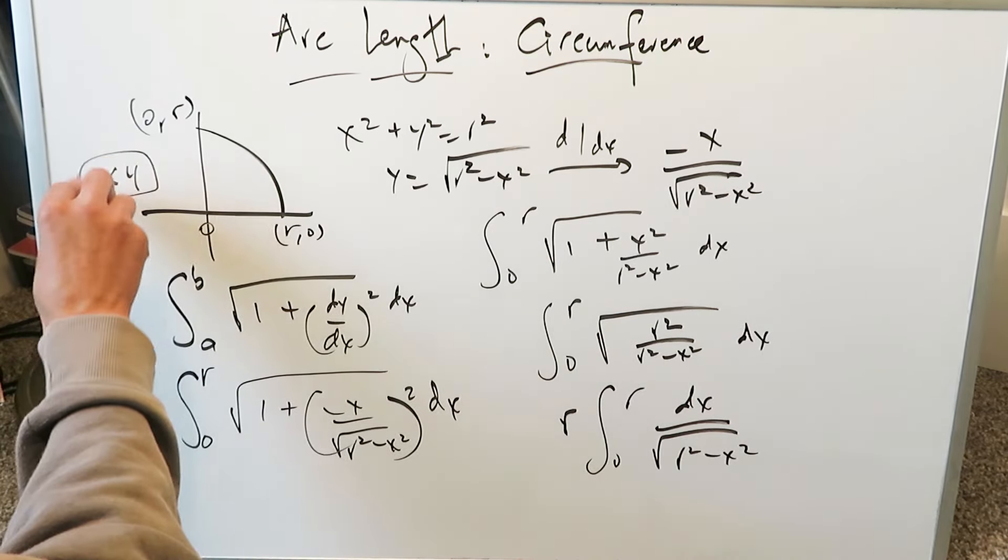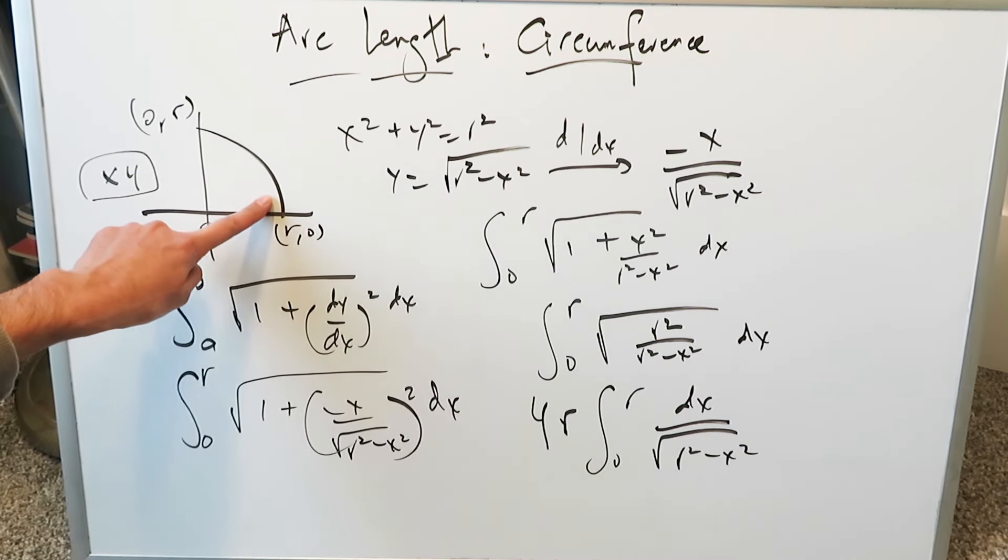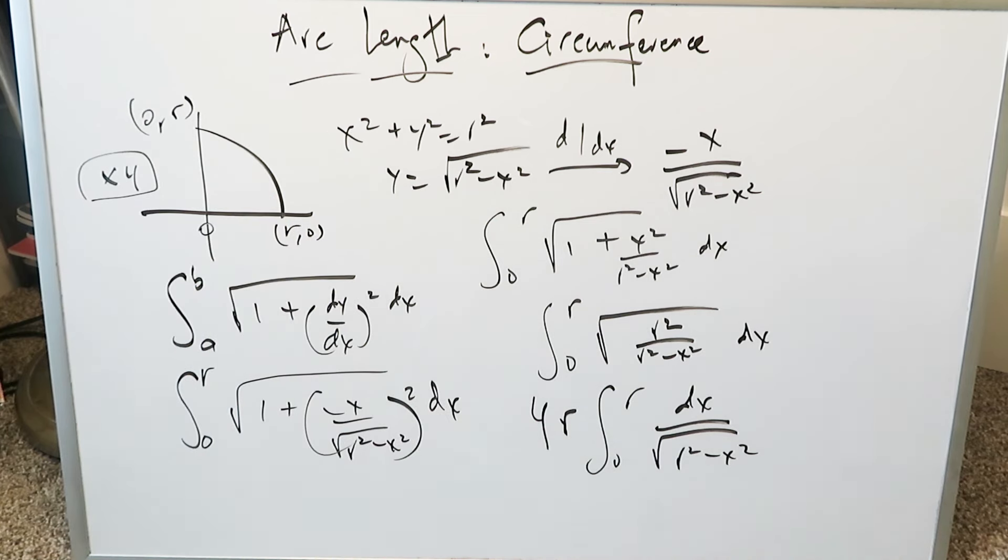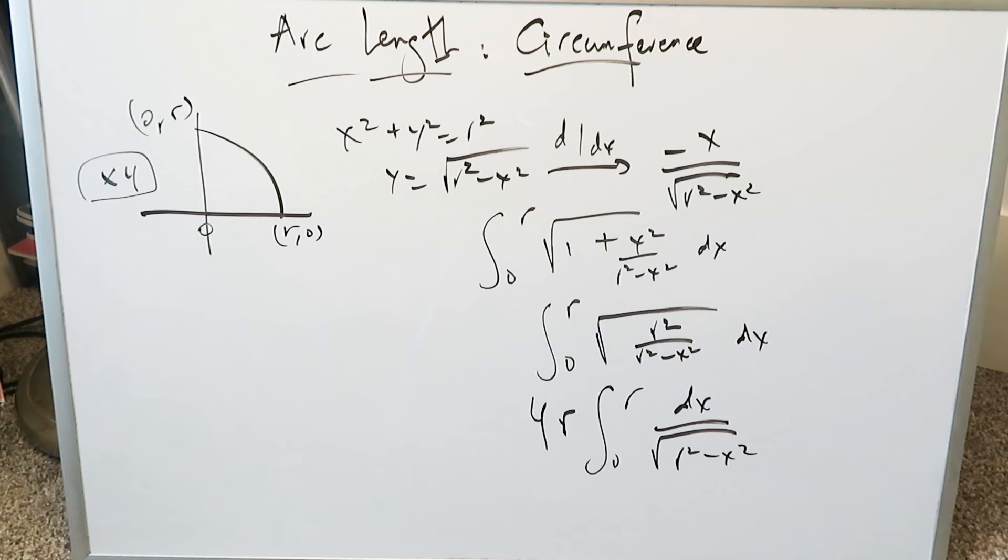Now let's look at this times 4. We'll bring the times 4 over here because this represents a quarter of a circle circumference. The 4 will capture everything that's missing. So let's complete it.